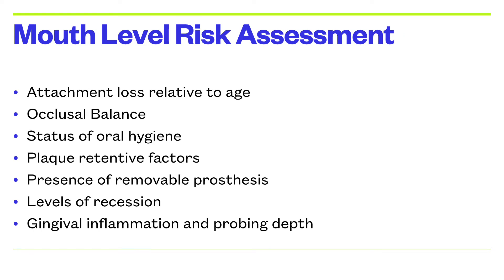At the mouth level risk assessment, we look for attachment loss relative to age. As age progresses we expect more periodontitis, but if we see the level of attachment loss typically seen in a 60-year-old appearing in a 40 or 30-year-old, that person is placed in a high risk category. Similarly, if their occlusal balance is off and they are putting extra load on periodontally affected teeth, they again go into the high risk category.